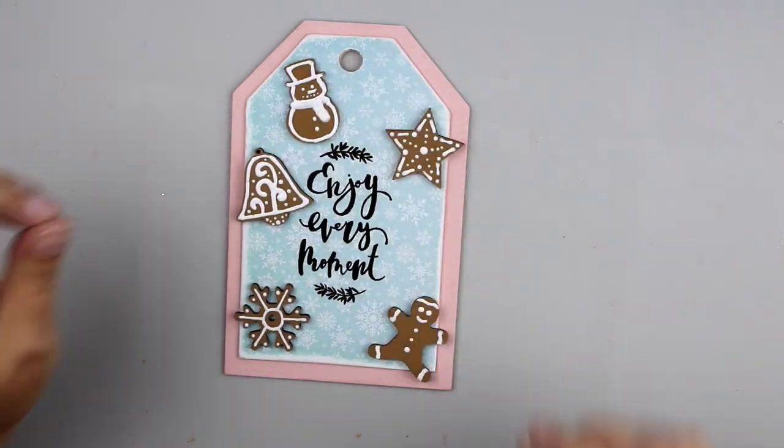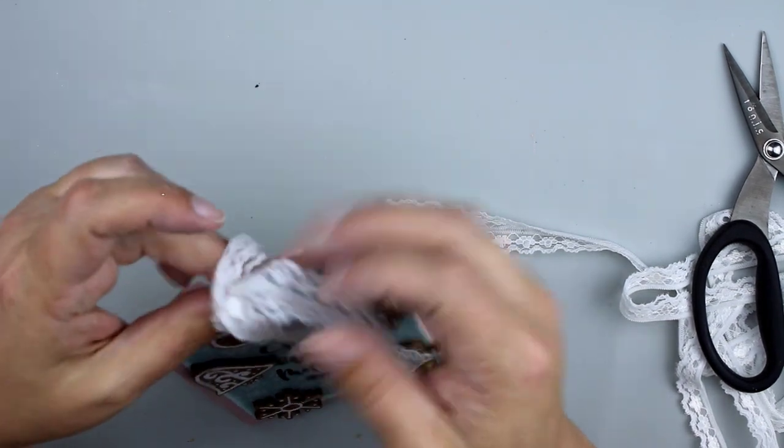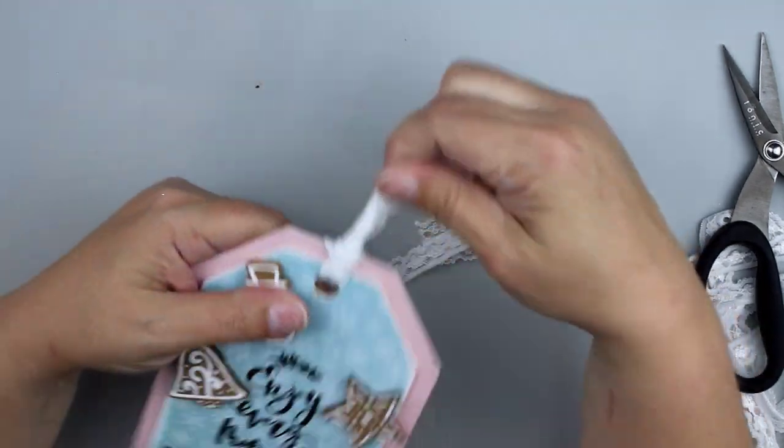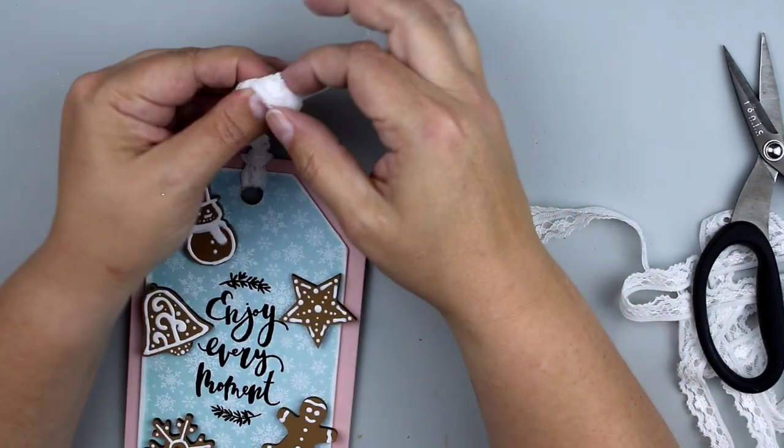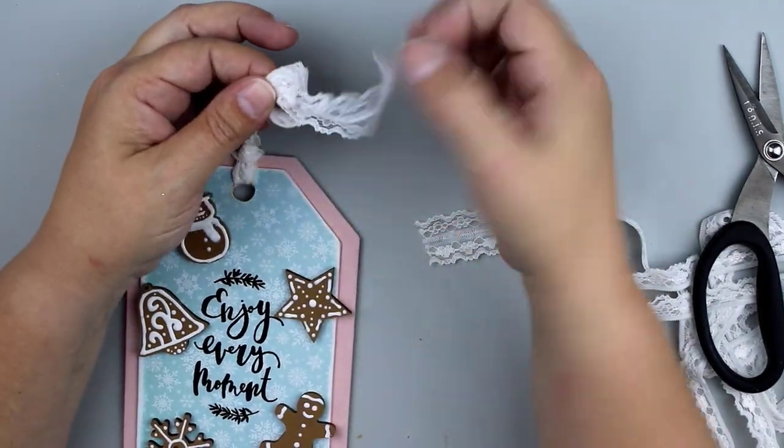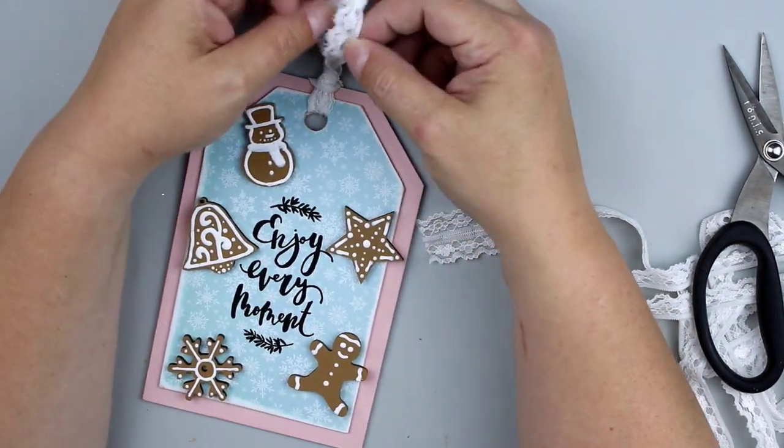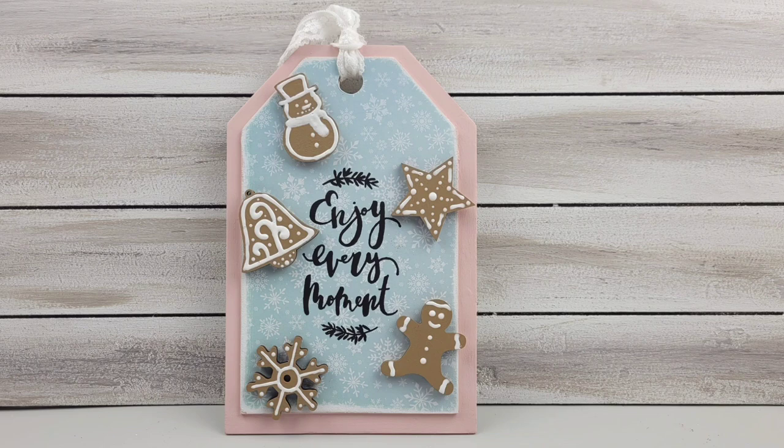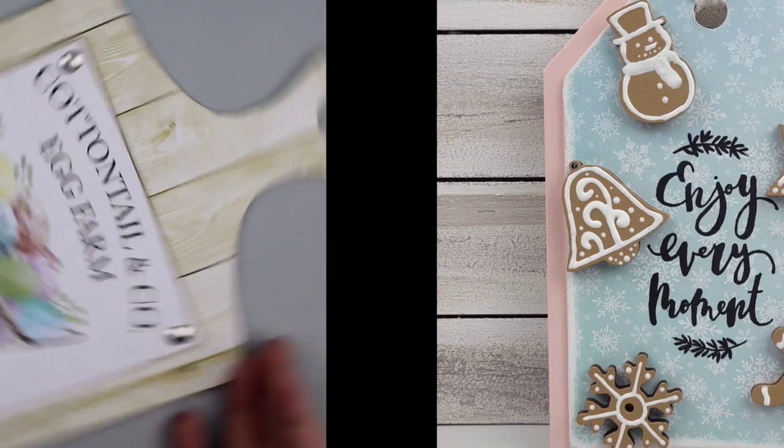Now I'm going to add my cookies back on with some hot glue. And then I'm going to add a pretty little trim at the top of some white lace. And look how cute and pretty this is. This would look really lovely on a wall or on a tear tray or on a shelf for your Christmas season.